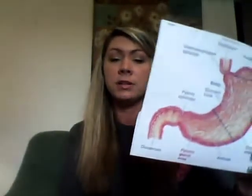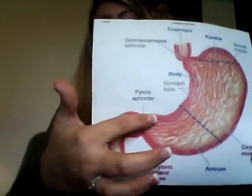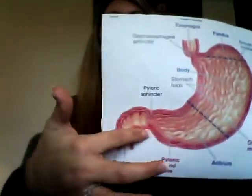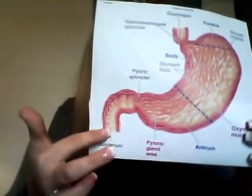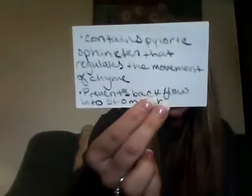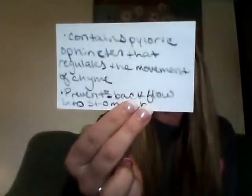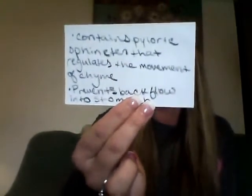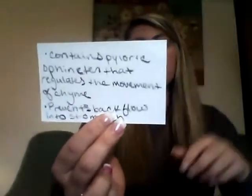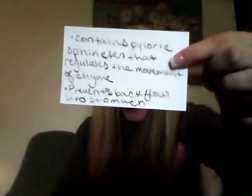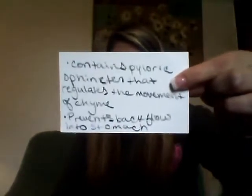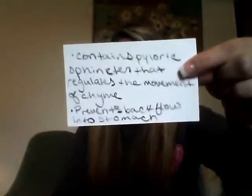Last but not least, we have the pylorus, which is right here between the pyloric antrum and the small intestine. The pylorus contains a pyloric sphincter that regulates the movement of chyme — chyme being partially digested food. The pylorus also prevents the backflow of chyme back into the stomach by way of the pyloric sphincter.